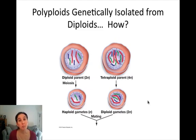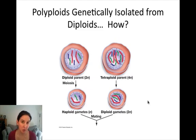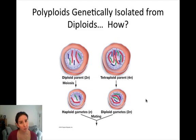The main point is that these polyploid individuals are now genetically and reproductively isolated from the diploids, so evolutionary forces can act on them and speciation can occur. But how exactly are the polyploids genetically isolated from the diploids?